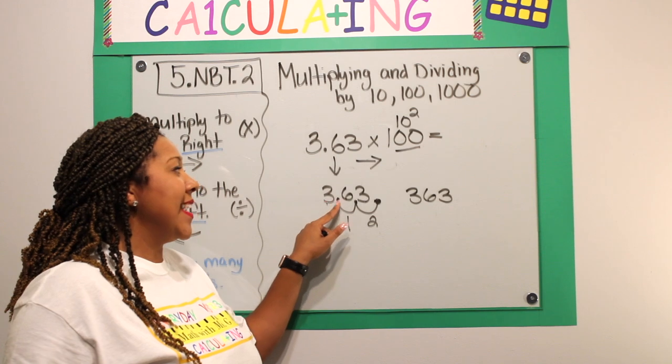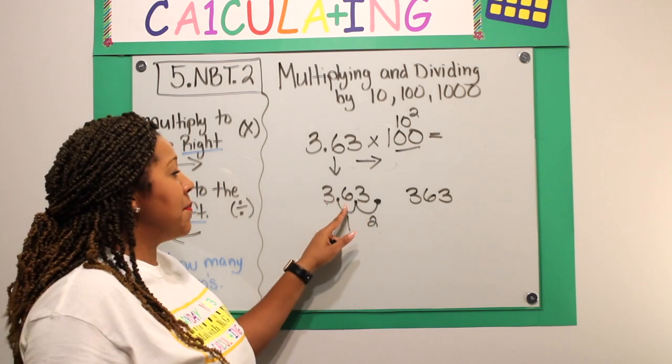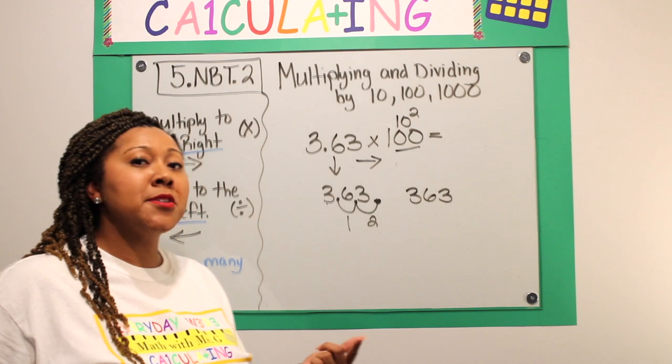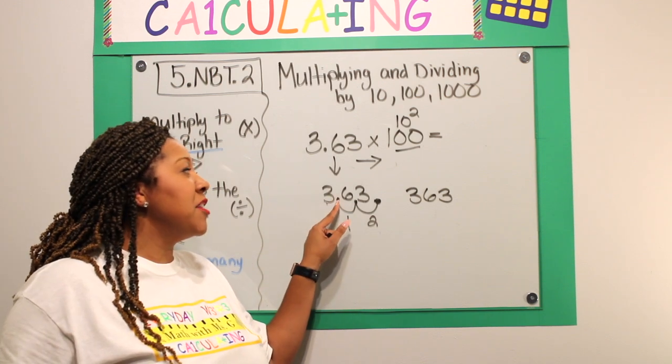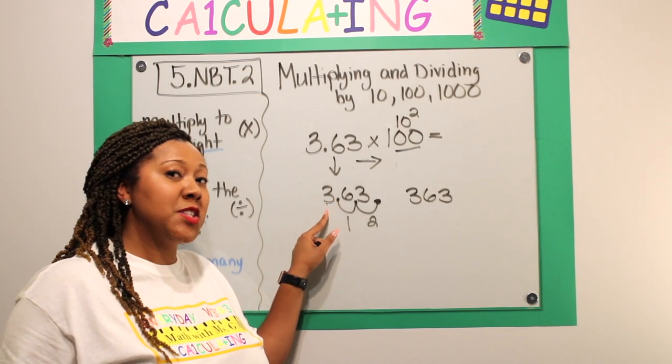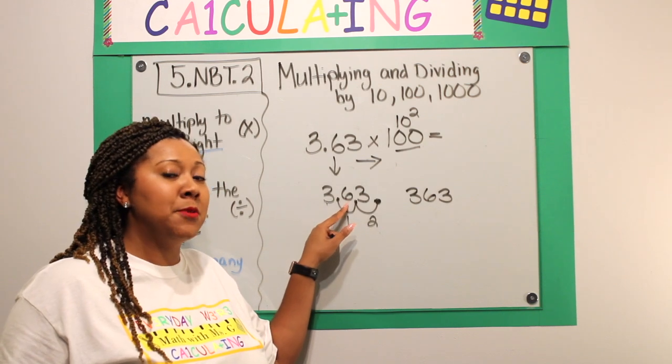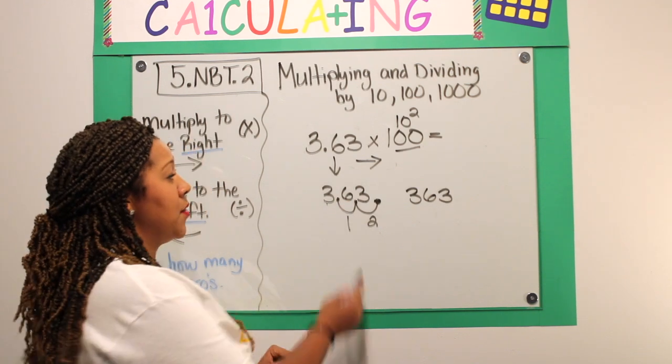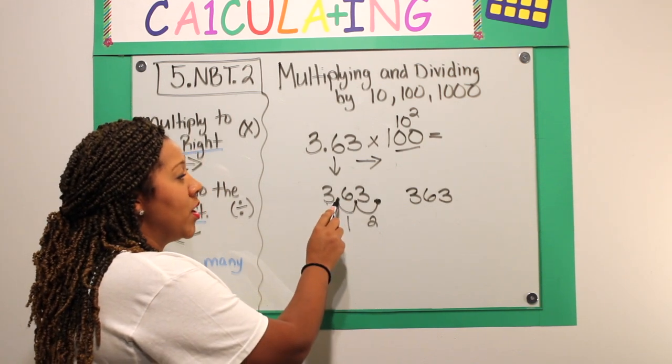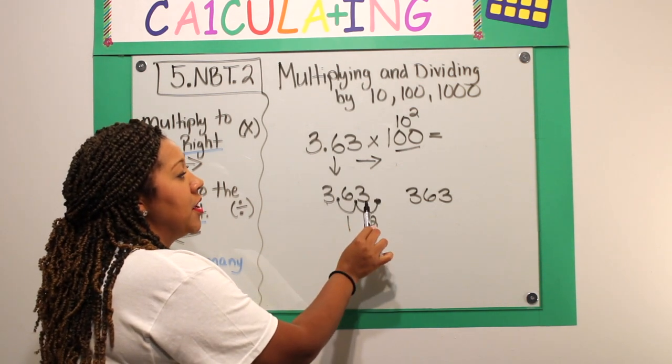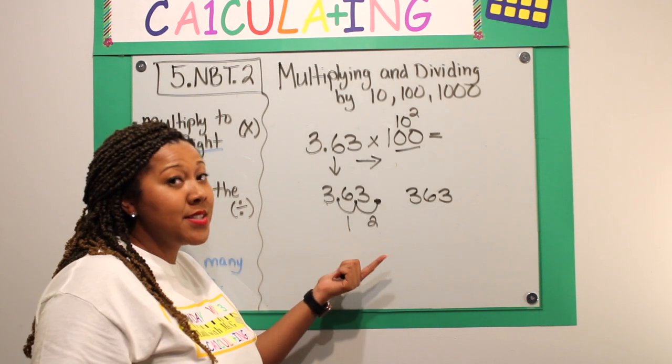The decimal in 3 and 63 hundredths separated the ones from the tenths place. It should also be noted that the digit in front of the decimal is the ones place and the place value immediately after the decimal is the tenths place. I moved from the ones in between the ones and the tenths to after the hundredths place.